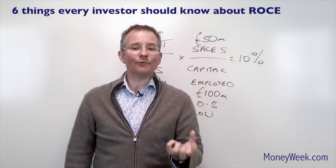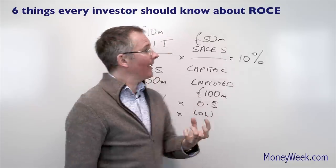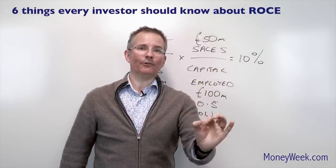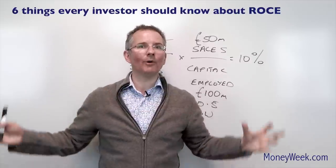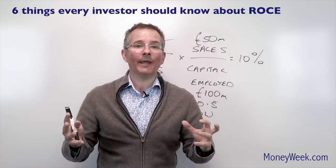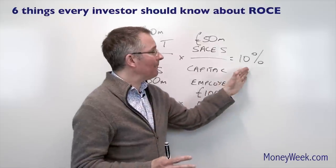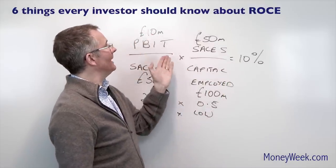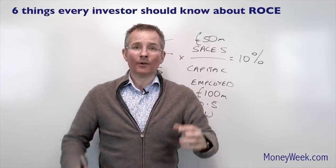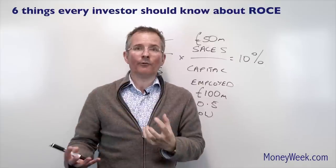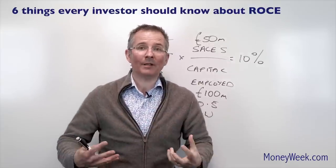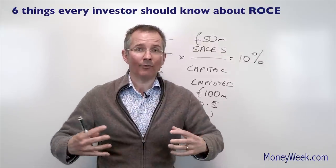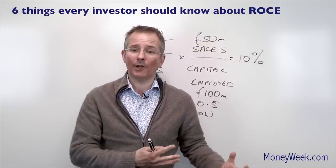Secondly, it doesn't really give you any feel for scale. If I tell you a company's got a return on capital employed of 10%, it could be a minuscule firm or a massive multinational corporation — there's no way of knowing. A 10% ROCE could translate into a PBIT of 10 million, or 1 million, or 10 pence. It tells you what sort of return you're getting on capital, but you can't go much further than that in terms of the overall size of the business.